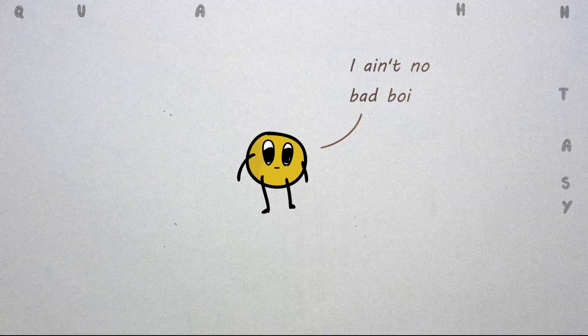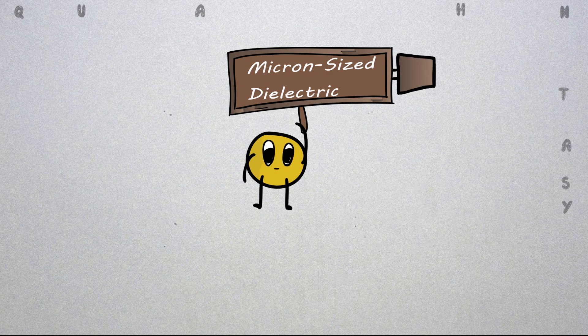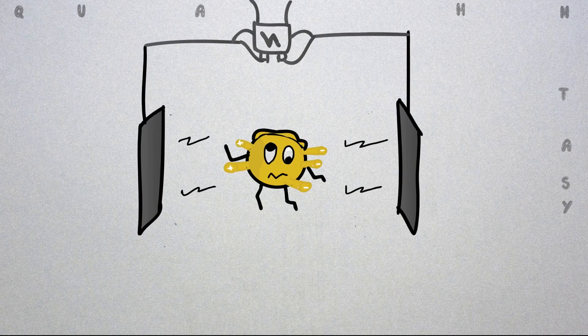Let us take this bad boy. This bad boy is a micron-sized dielectric particle, which means it is an insulator and can be polarized by an applied electric field.